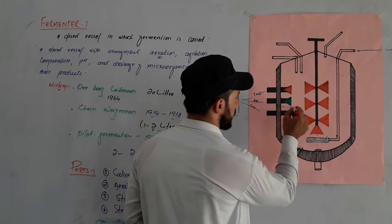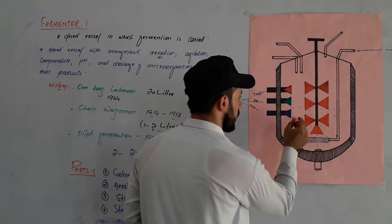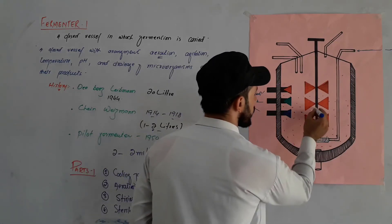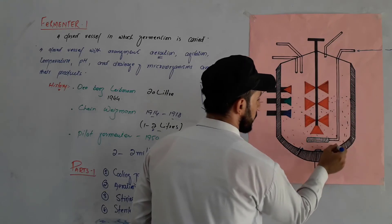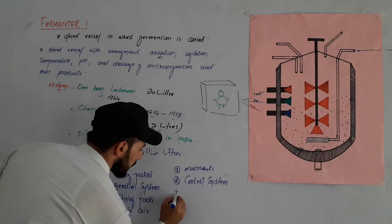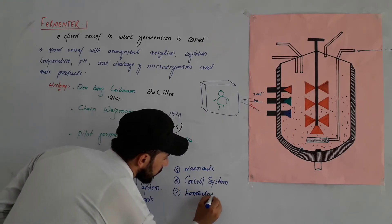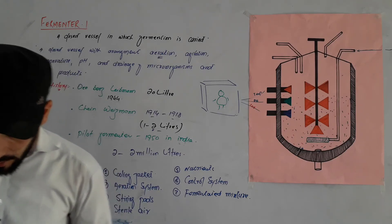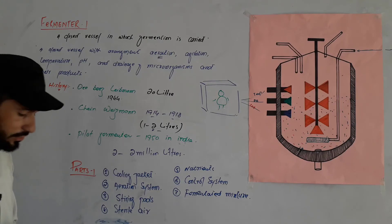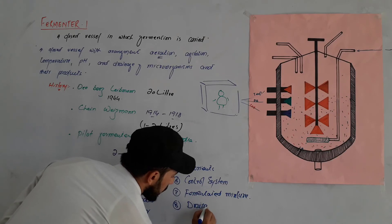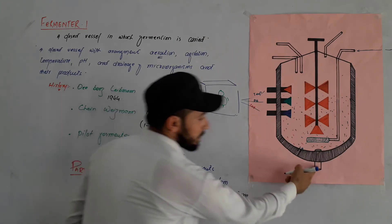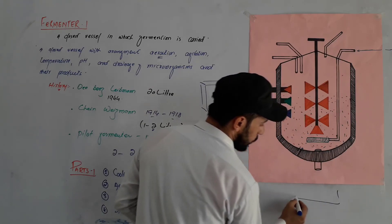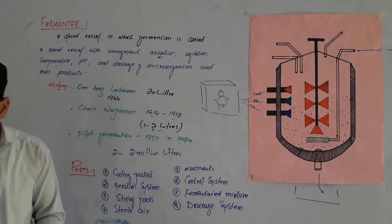Now the topic of fermented mixture — the product. After fermentation is complete, for example a master product or bacteria-based product is ready. This is part number seven — the fermented mixture outlet. The drainage system is used to remove the fermented mixture and products from the fermenter.